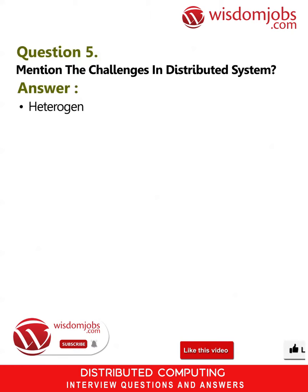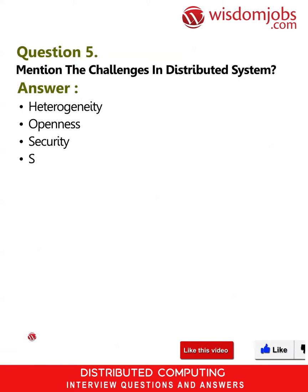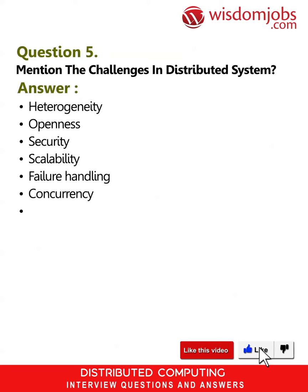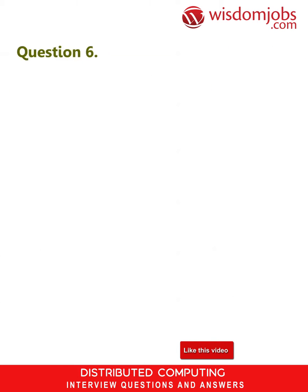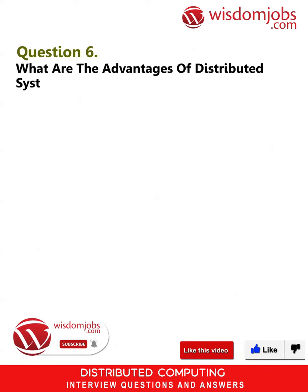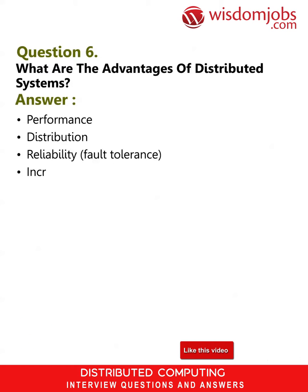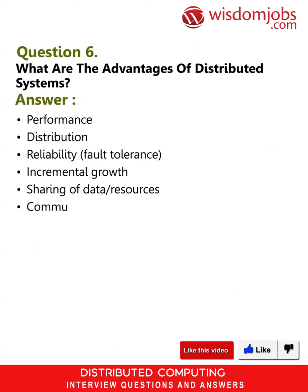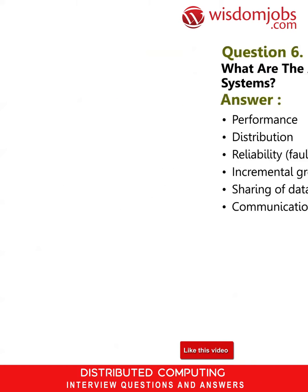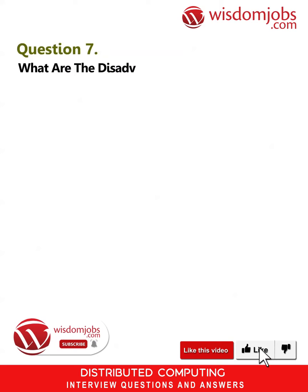Question 5: Mention the challenges in distributed system. Answer: Heterogeneity, openness, security, scalability, failure handling, concurrency, transparency. Question 6: What are the advantages of distributed systems? Answer: Performance, distribution, reliability, fault tolerance, incremental growth, sharing of data resources, communication.